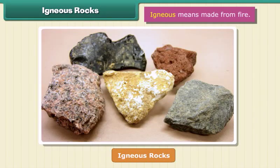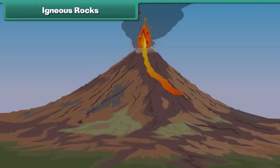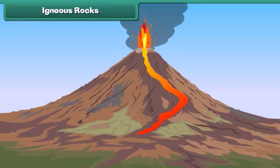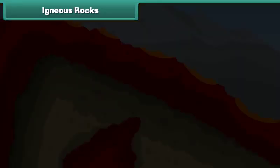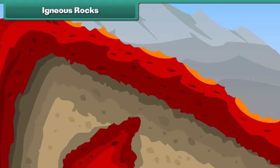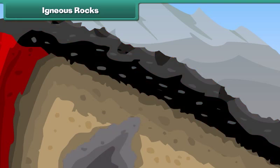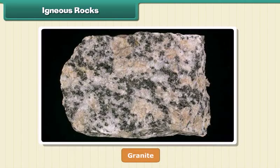Igneous means made from fire. When volcanoes erupt, it causes the liquid rock to rise above the ground. When this liquid rock is present inside the earth, it is called magma. This magma cools and becomes solid. Rocks thus formed are called igneous rocks. They are also called primary rocks. Granite is an example of igneous rock.